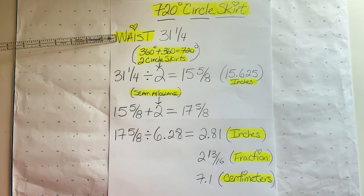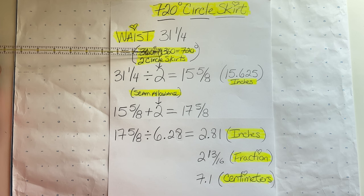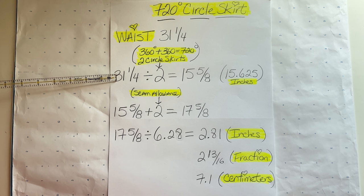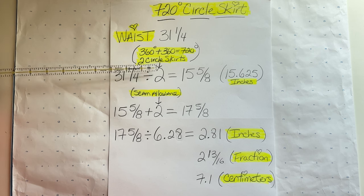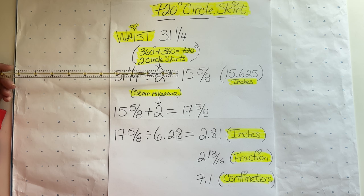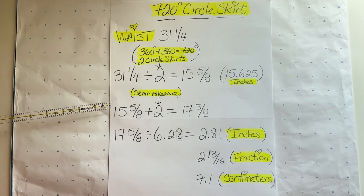Let's start with some measurements. We're going to make a 720 circle skirt, so my dress form waist measurement is 31 and 1/4 inches. 360 plus 360 equals 720, that's two circle skirts. 31 and 1/4 divided by two circle skirts equals 15 and 5/8, that's 15.625 inches.